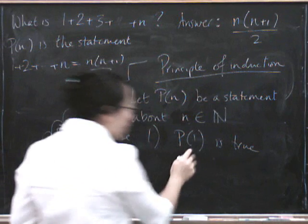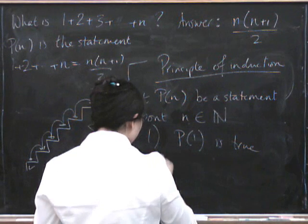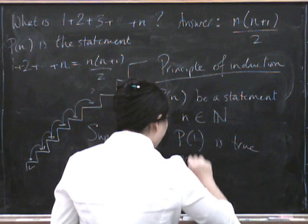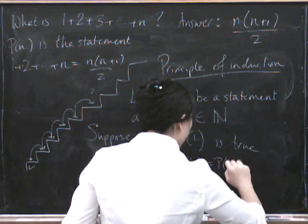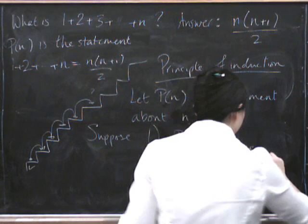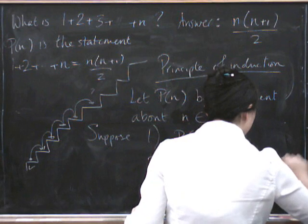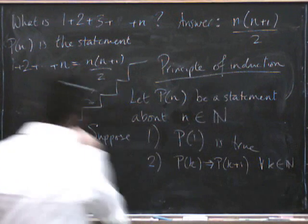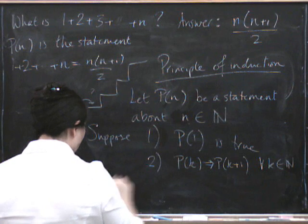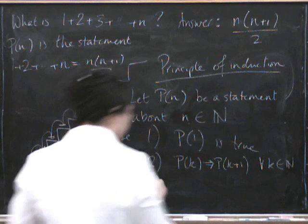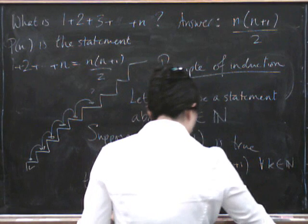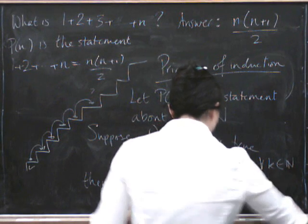So if it's true at 1, and if P of k implies P of k plus 1 for all k in the natural numbers—that's this step—then P of n is true for all n in the natural numbers.